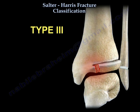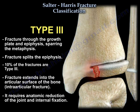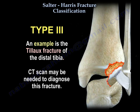Type 3 is a fracture through the growth plate and the epiphysis, sparing the metaphysis — the fracture splits the epiphysis. 10% of fractures are type 3. This fracture extends into the articular surface of the bone, making it an intra-articular fracture. It requires anatomic reduction of the joint and internal fixation. An example is a triplane fracture of the distal tibia, and a CT scan may be needed to diagnose it.